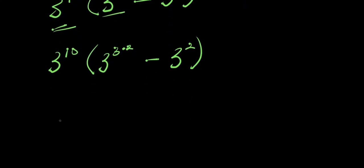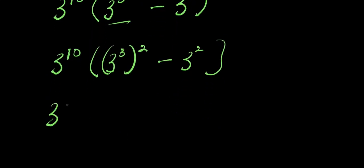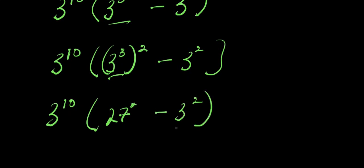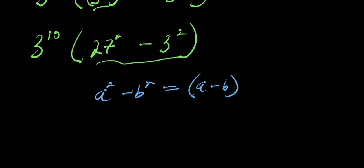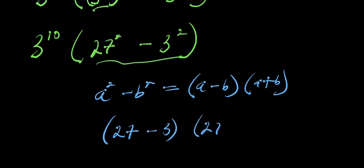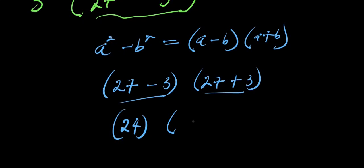So from here we have 3 to the power of 10 times the quantity 3 to the power of 3, which is 27, squared, minus 3 squared. In the bracket we apply the difference of squares identity: a squared minus b squared equals a minus b times a plus b. This gives us 27 minus 3 times 27 plus 3, which is 24 times 30.